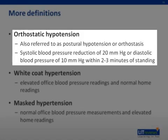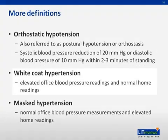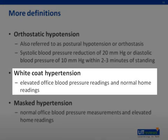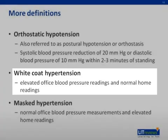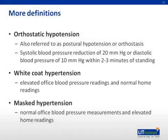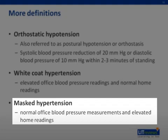At times, there is a discrepancy between blood pressure measurements taken at home versus those taken in the clinic setting. White coat hypertension occurs when office blood pressure measurements are elevated, but measurements performed at home are normal. On the contrary, masked hypertension is blood pressure that is found to be normal in clinic, yet home blood pressure measurements are elevated.